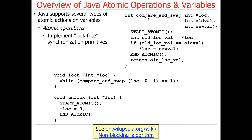If the values are equal — we compare, are they equal? — if they are equal, we swap. So we take the new value and store it into that memory location. Then we end the atomic region and return the old value.